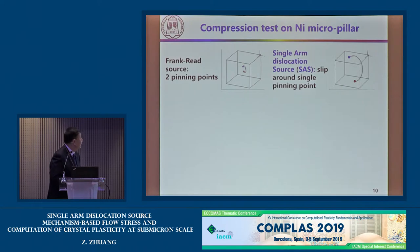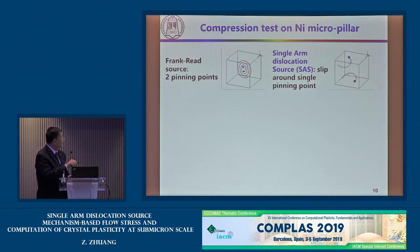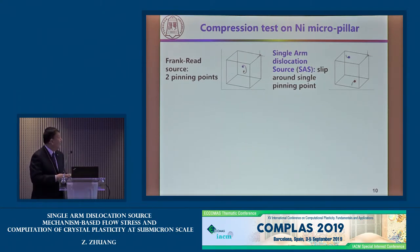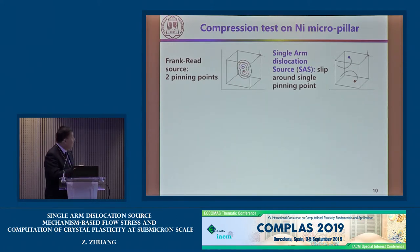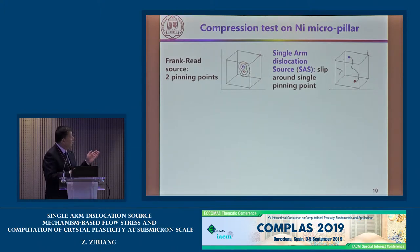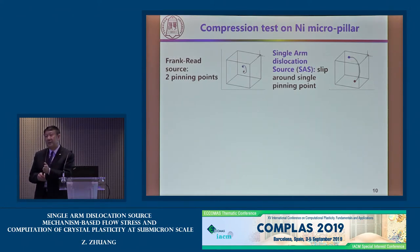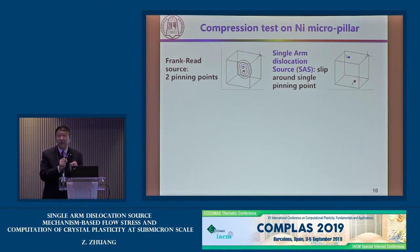We have two source models. The Frank-Read (FR) source has two pinning points expanding in the sample — the dislocation curve expands but never breaks. But for small sizes, single-arm dislocation (SAS) sources occur because the dislocation curve is very close to the free boundary. When it curves to the free surface, it is broken. The FR source, once broken, changes to a single-arm dislocation source — we call this SAS.